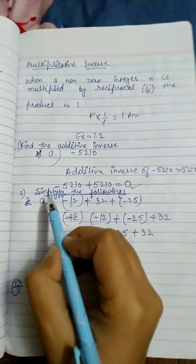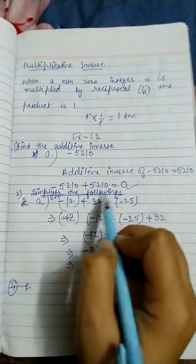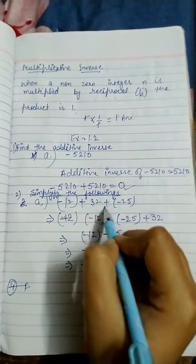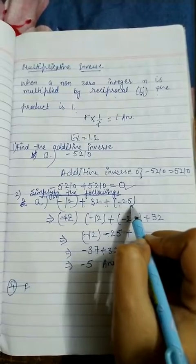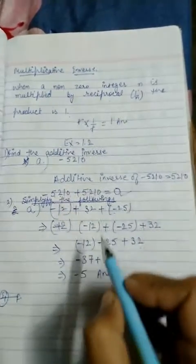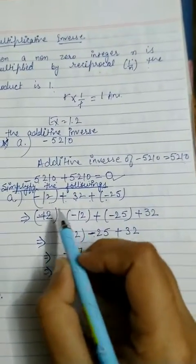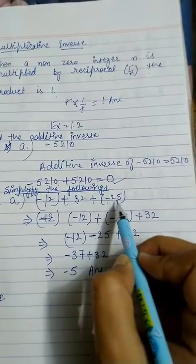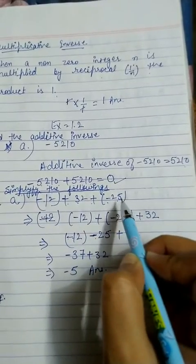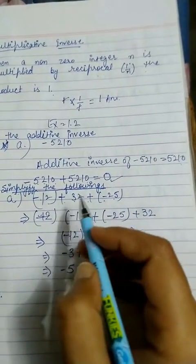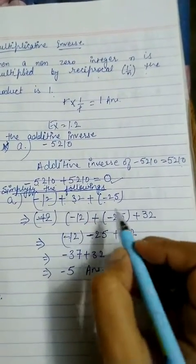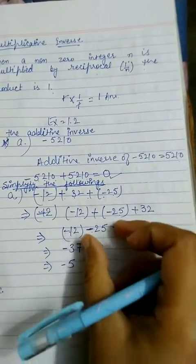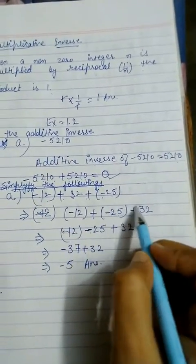The next question is: simplify the following. We have minus 12 plus 32, plus minus 25. We arrange the terms — this is a negative term and this is also a negative term. So we have two negative terms.